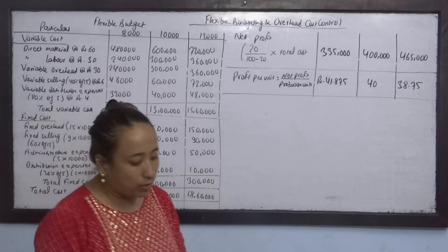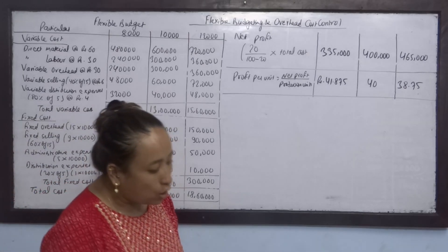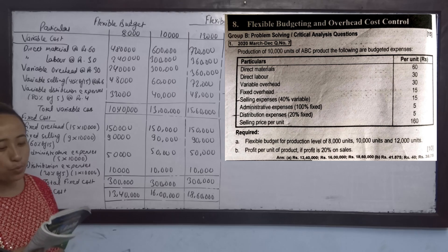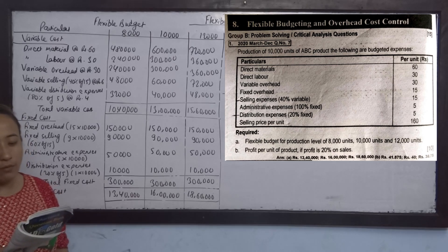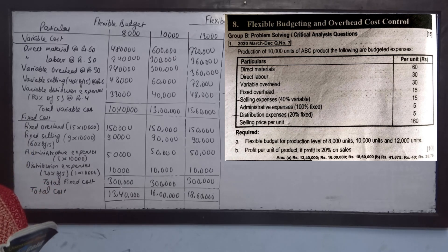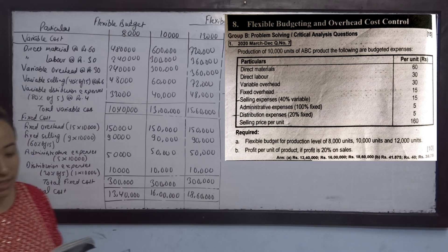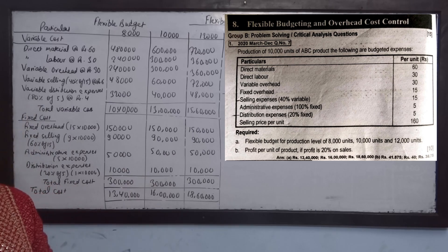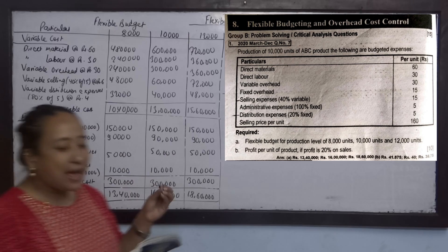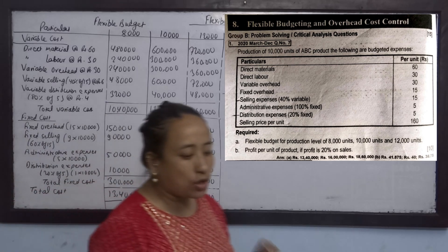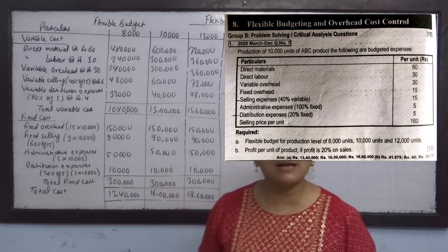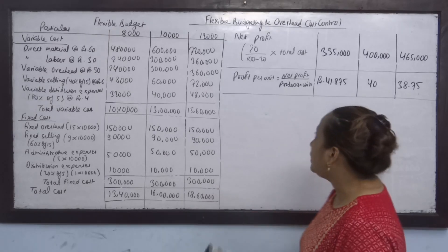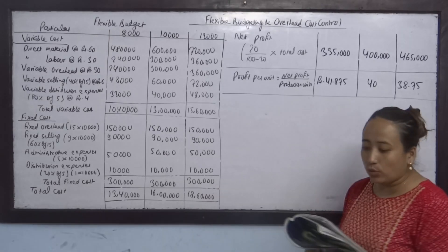This is a question. Production of 10,000 units of ABC product — the following are budgeted expenses for 10,000 units, covering different types of expenses.